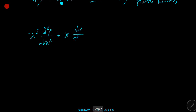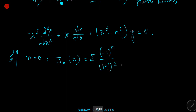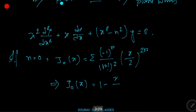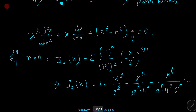The Bessel equation is x²(d²y/dx²) + x(dy/dx) + (x² − n²)y = 0. Now if n = 0, then J₀(x) = Σ [(-1)^r / (r!)²] · (x/2)^(2r), which gives: J₀(x) = 1 − x²/2² + x⁴/(2²·4²) − x⁶/(2²·4²·6²) + ...